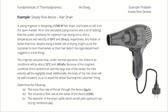The engineer assumes that under normal conditions, the ambient air will be about 22 degrees Celsius and 100 kilopascals. Because of the stagnant condition of the ambient air and the large size of the intake, the inlet velocity will be negligibly small. The body of the hairdryer will be well-insulated. Determine first the mass flow rate of the air through the device, second the volumetric flow rate at the outlet, and third the diameter of the outlet which would yield optimum hair-drying conditions.